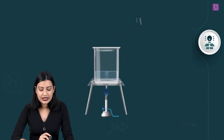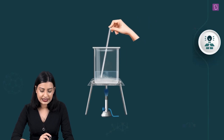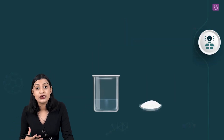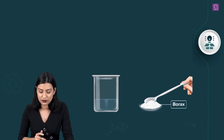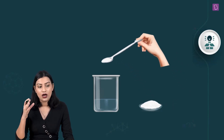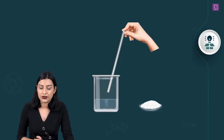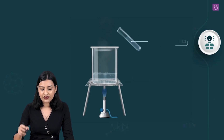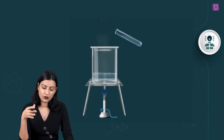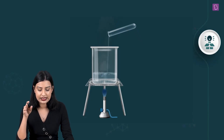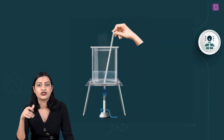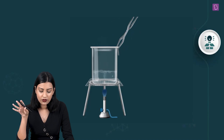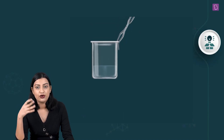When we heat it, the solubility increases — borax is soluble in hot water. After dissolving borax in hot water, concentrated HCl is added to the mixture.